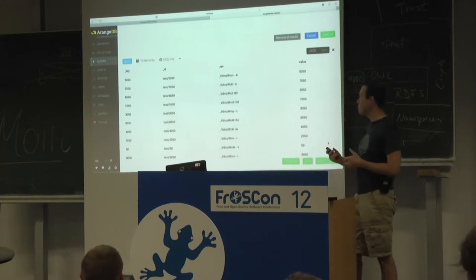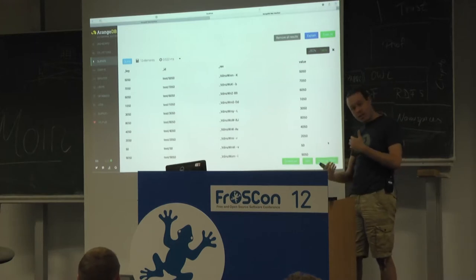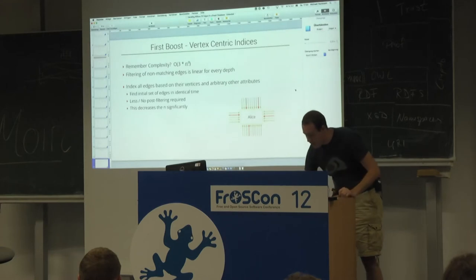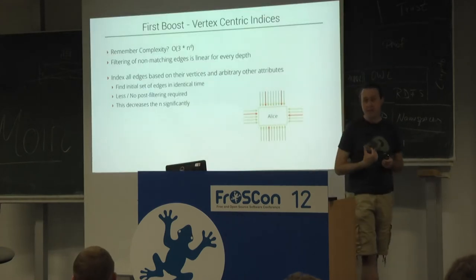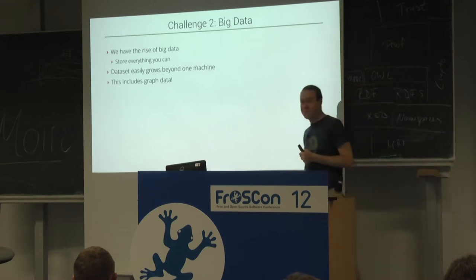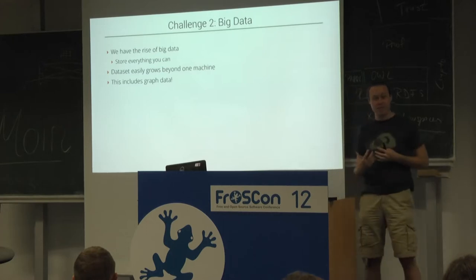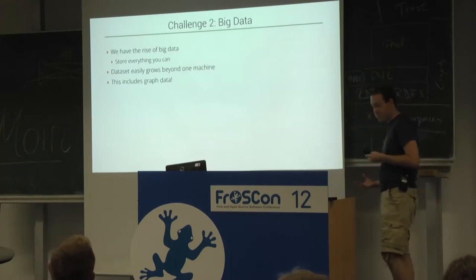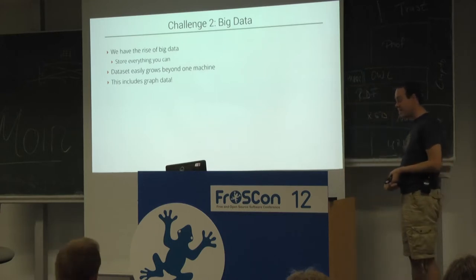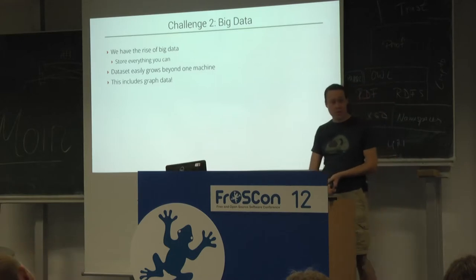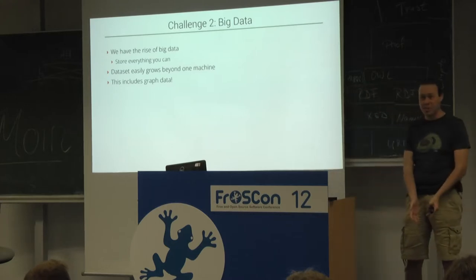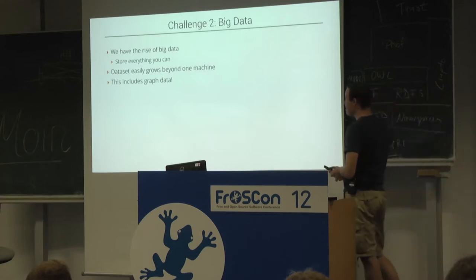That only works if you have certain attributes you filter on at the edge level, so make sure you put some information into the edge as well. However, this was running on my local laptop — that's not the topic of this talk. The topic is big data. Whenever we have a graph larger than what fits on one machine, the data set easily grows beyond a single machine, and customers say they cannot fit their data into one machine and need 100 at least — and of course this includes graph data.